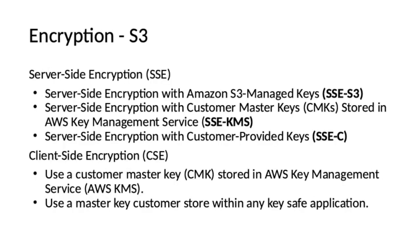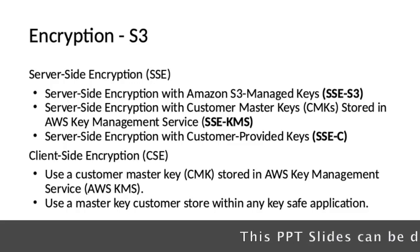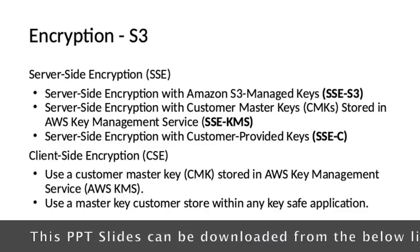Let's talk about encryptions in S3. There are two types: server-side and client-side encryption. In server-side encryption, it is further divided into three: SSE-S3 (server-side encryption with Amazon S3 managed keys), SSE-KMS (server-side encryption with customer master keys stored in AWS KMS), and SSE-C (server-side encryption with customer-provided keys). Client-side encryption happens at the client level. If data in transit needs to be encrypted, client-side encryption is preferred.